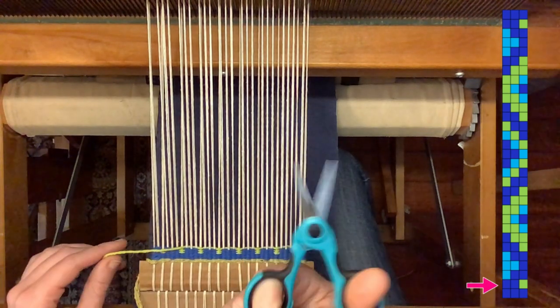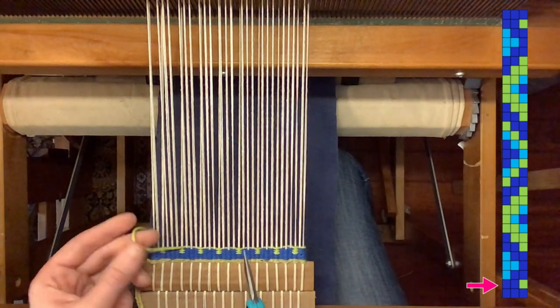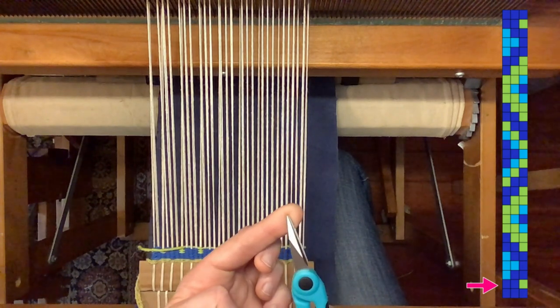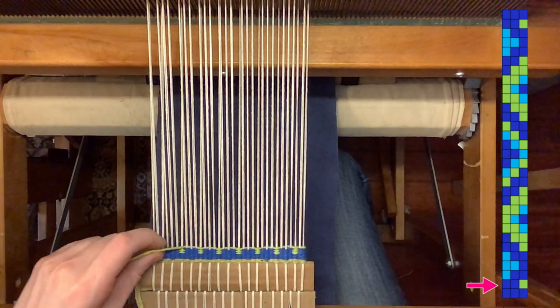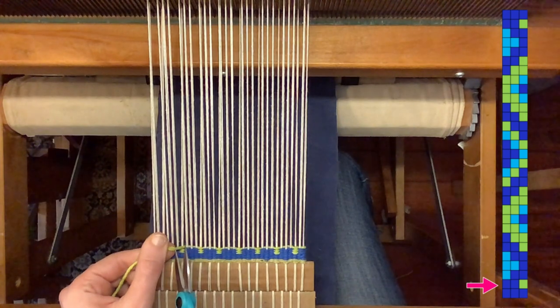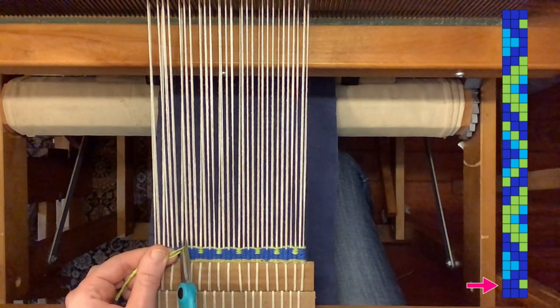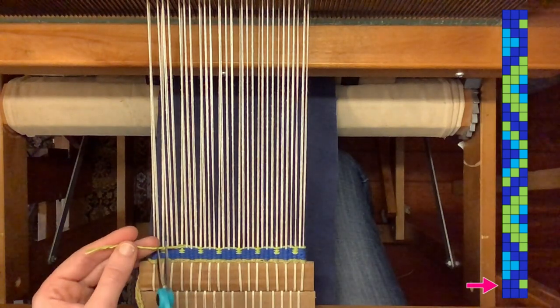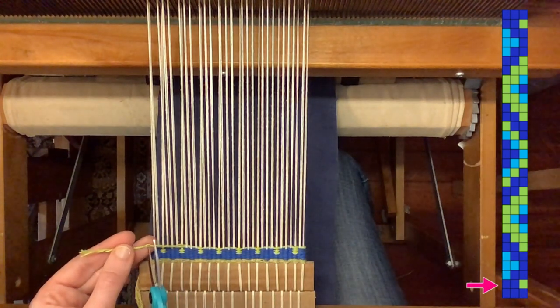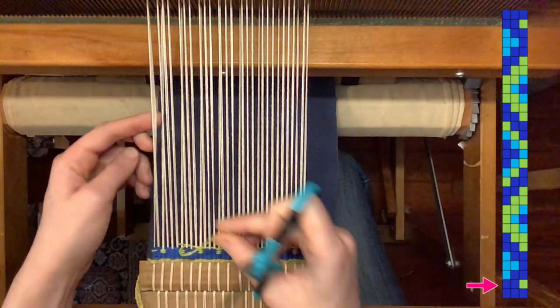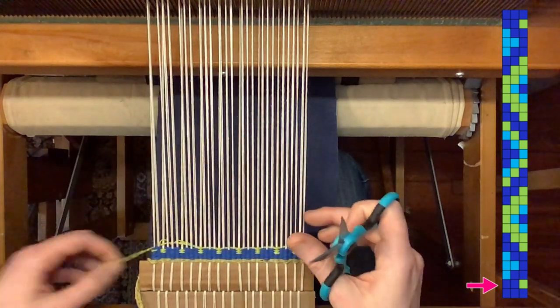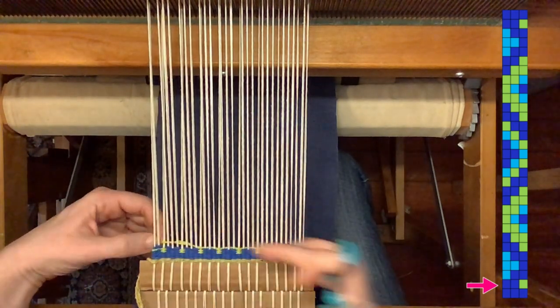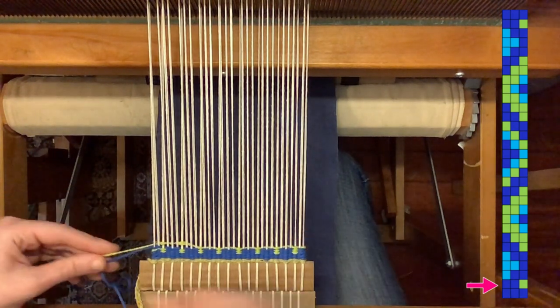In order to do that I'm going to use precision scissors that have very pointy tips, and I'm going to go in here and split the plies apart and just trim out one ply at a time. This is a four-ply yarn, so I'm trimming two plies out before it even gets to the edge.